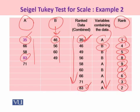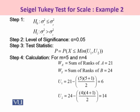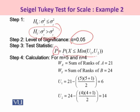Once the ranks are assigned, we proceed with the hypothesis testing procedure. The alternative hypothesis states that we check whether the variation in machine A is more than that of machine B — that is, sigma-squared X is greater than sigma-squared Y. Under step 2, alpha is 0.05. The test statistic under step 3 involves calculating p, which is the probability of X less than or equal to the minimum of U1 and U2. We are employing the Wilcoxon rank-sum test to implement the Siegel-Tukey test for scale.